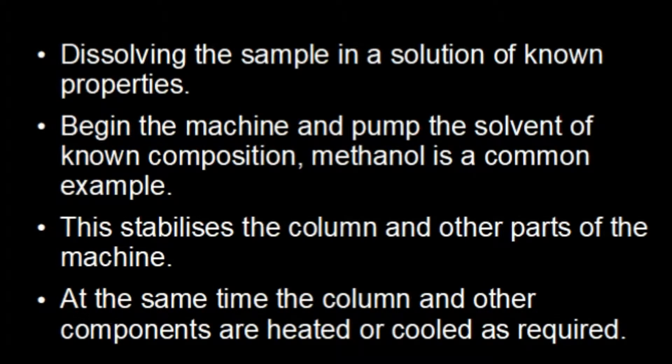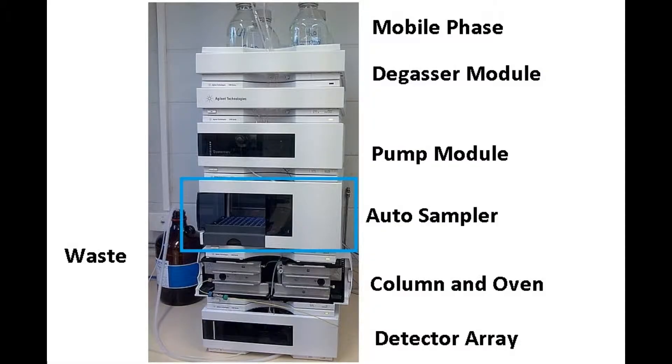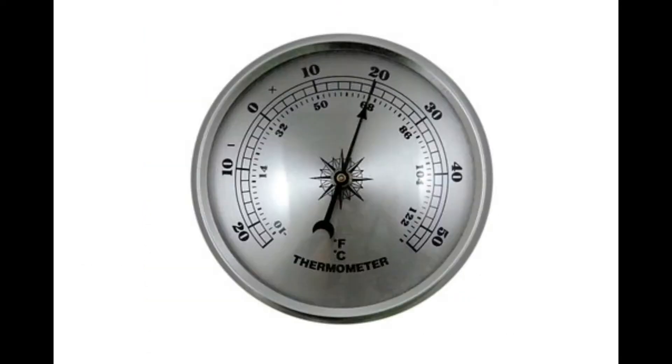Whilst the column becomes hydrated and stabilizes, the column and other components are heated or cooled as required. Many modern HPLC machines have a refrigerated sample tray, and this is useful for protecting and preserving protein, nucleic, temperature-sensitive samples like food. The machine runs for a time to bring these bays down to temperature.